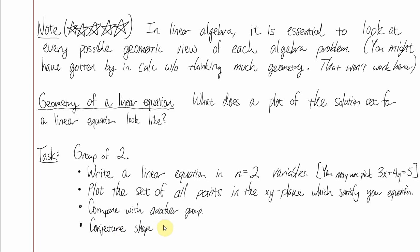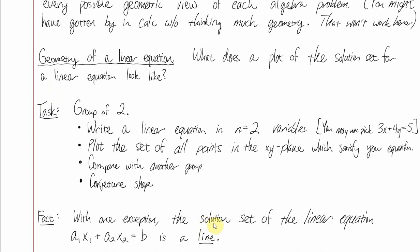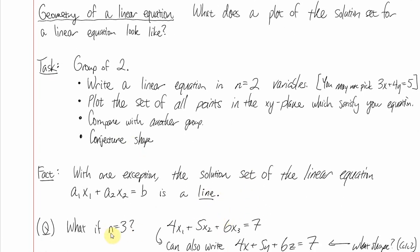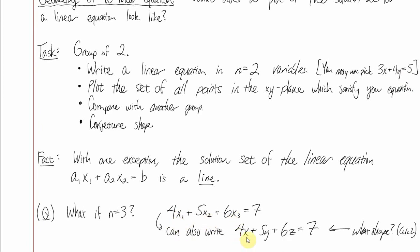Welcome back. With one exception, what you should get is a line. For any choices of a₁, a₂, and b, you'll get a line — the exception being if a₁ and a₂ are both zero. So if your conjecture was a line, that's correct. Already putting the 'linear' in linear algebra. For n = 3, if you graph all points satisfying 4x₁ + 5x₂ + 6x₃ = 7, you get a plane — a result from Calc 2. Generally, with one exception, a linear equation in three variables describes a plane.